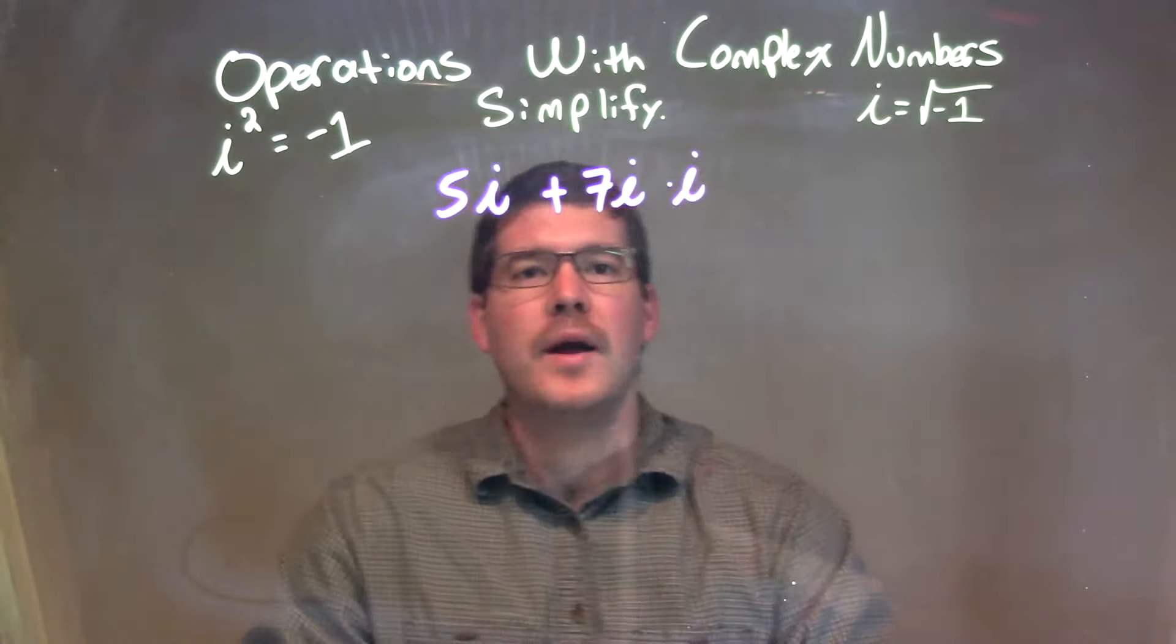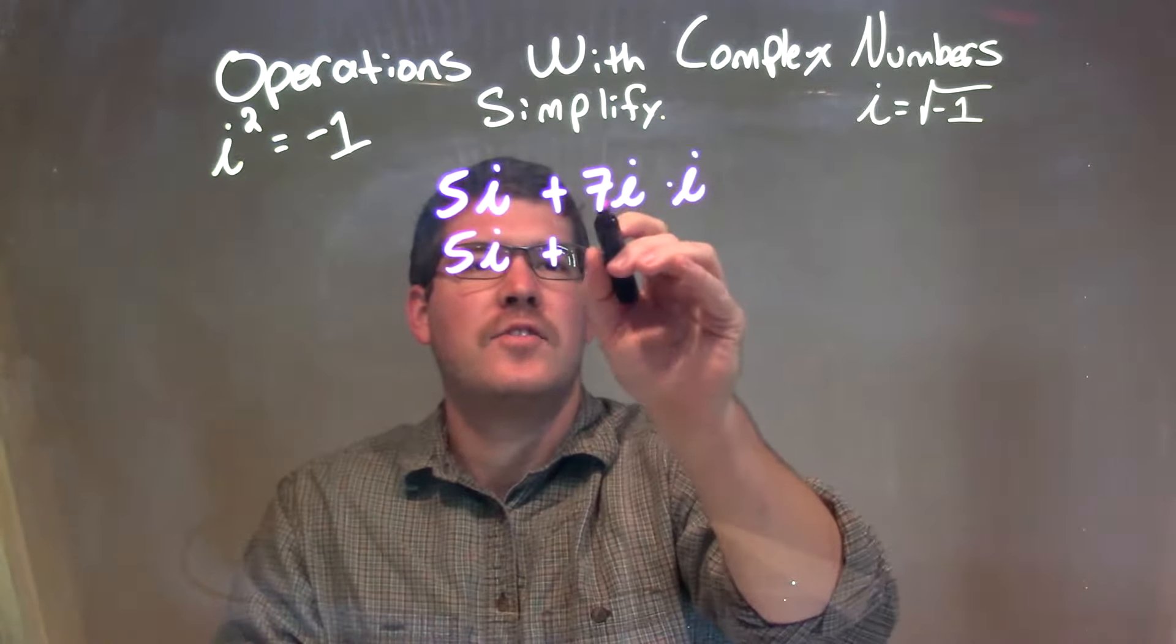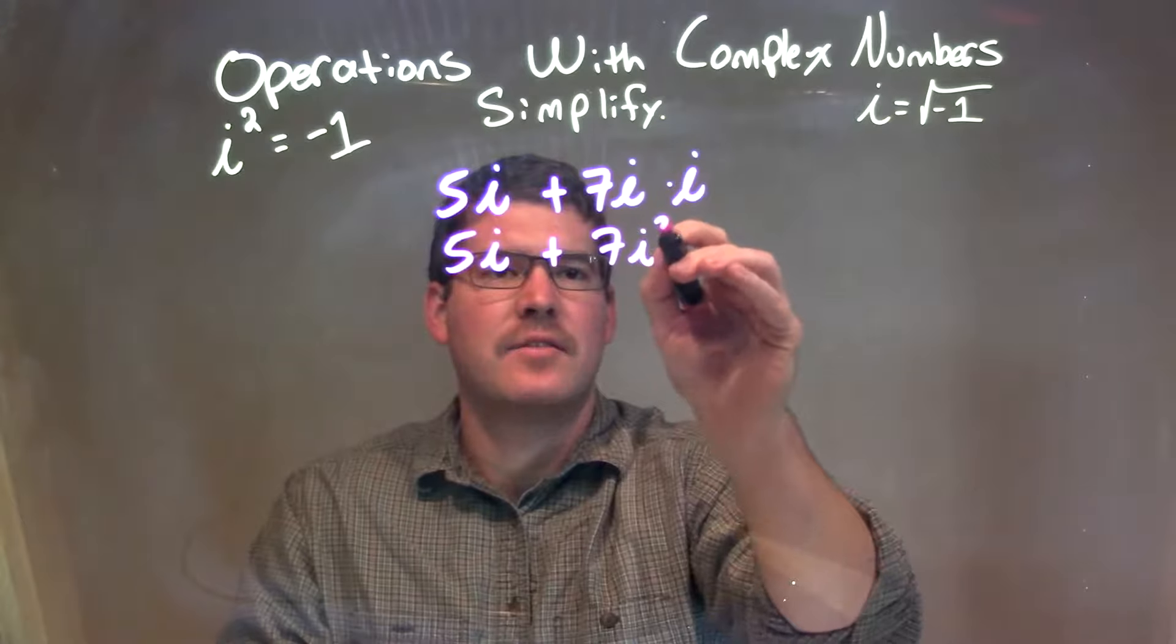Alright, well, right now I have to deal with my multiplication first, so I'm going to bring down the 5i right there. But 7i times i is 7i squared.